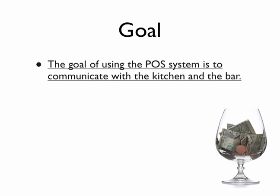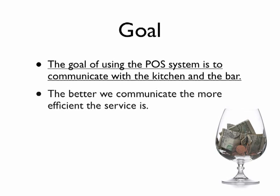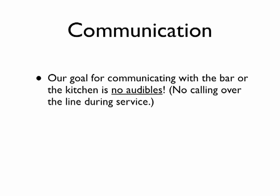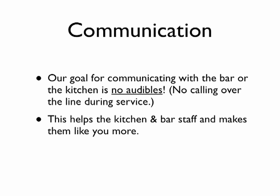Let's talk about what the POS system is there to do. The goal of using the POS system is to communicate with the kitchen and the bar. The better we communicate, the more efficient our service is, and efficiency equals more money for you at the end of the night. Our goal for communicating with the bar or the kitchen is no audibles — so no calling over the line during service in the kitchen, and no calling over the bar to the bartender whenever it can be avoided. We want to get everything on that check that prints out for the bartender or for the kitchen, so those drinks are ready for us when we arrive. This helps the kitchen and bar staff and makes them like you a whole lot more.